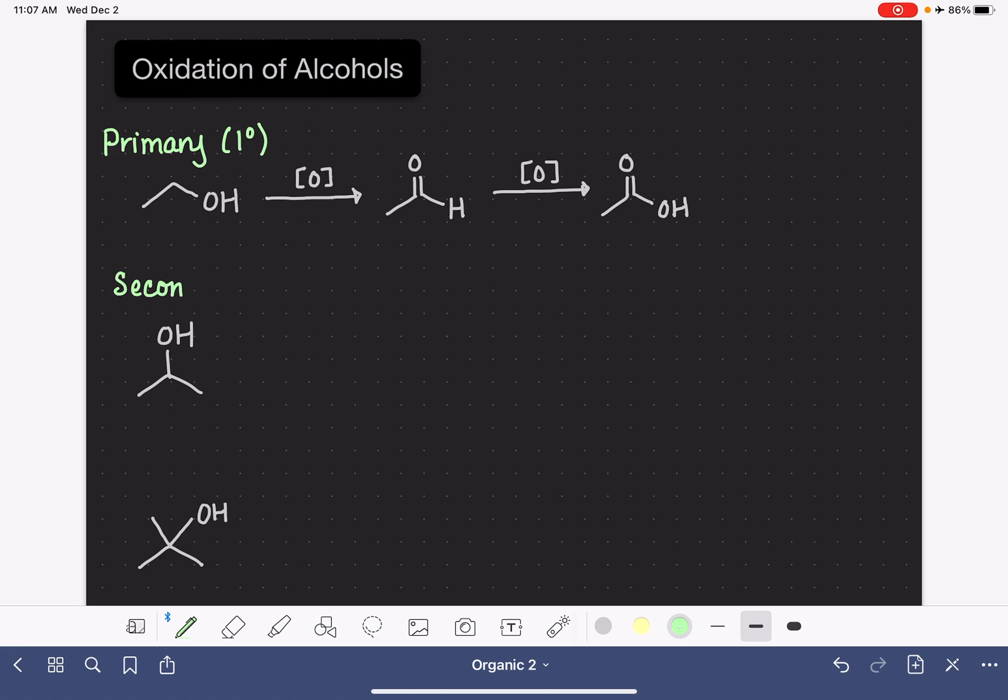Secondary alcohols, such as the one that I've listed here, are molecules where the OH group is bonded to a carbon that is bonded to two more carbons. So this would make a secondary alcohol.